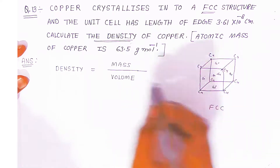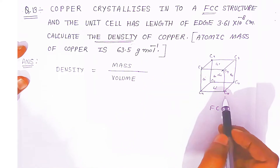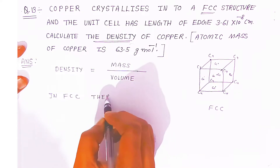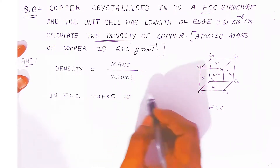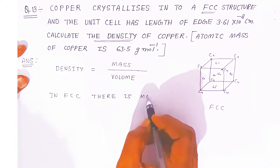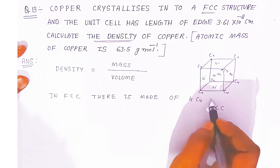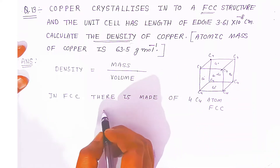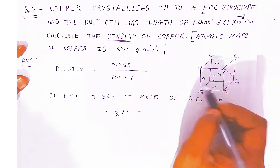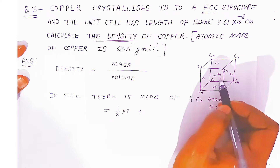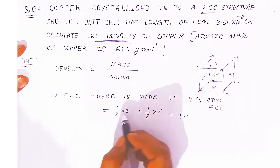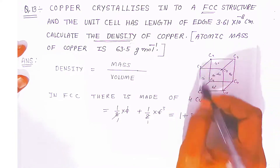First you should know how many copper atoms are there. In FCC, there are 4 atoms. How do 4 atoms come? Because 8 coppers are at the corners, so 1/8 part of the copper will be coming in this unit cell — 1/8 of 8 coppers. Plus there are 6 copper atoms on the surface, so 1/2 part of the copper will be present in the unit cell — 1/2 of 6. So 8×(1/8)=1, and 6×(1/2)=3, total 4 copper atoms. This FCC unit cell is made up of 4 copper atoms.